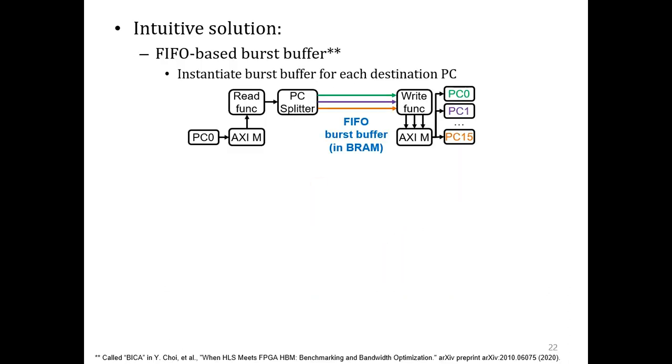An intuitive solution to this problem is to use a FIFO-based burst buffer for each PC. We reserve a BRAM-based FIFO for each destination PC, send the data to the corresponding FIFO one-by-one, and when we have enough, send the data to the PC in a burst.